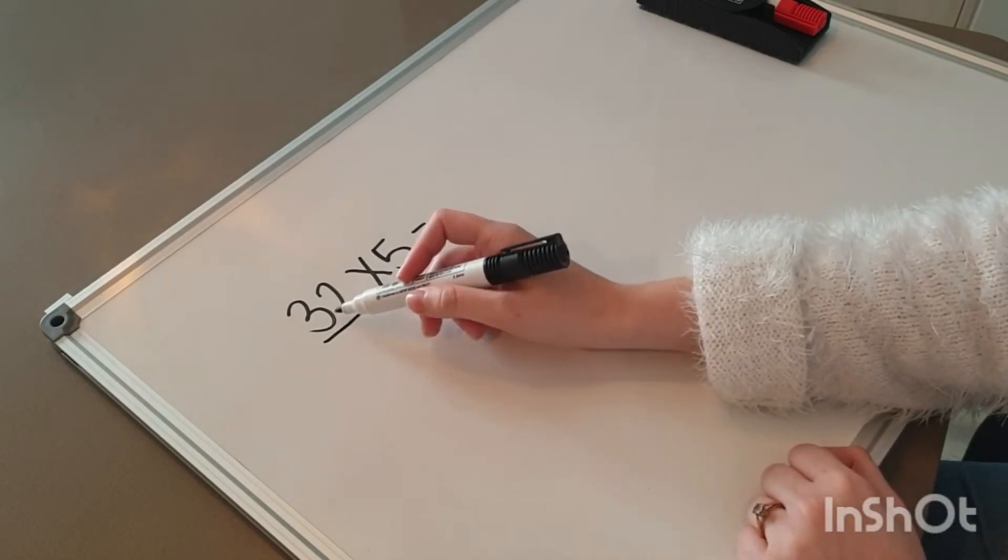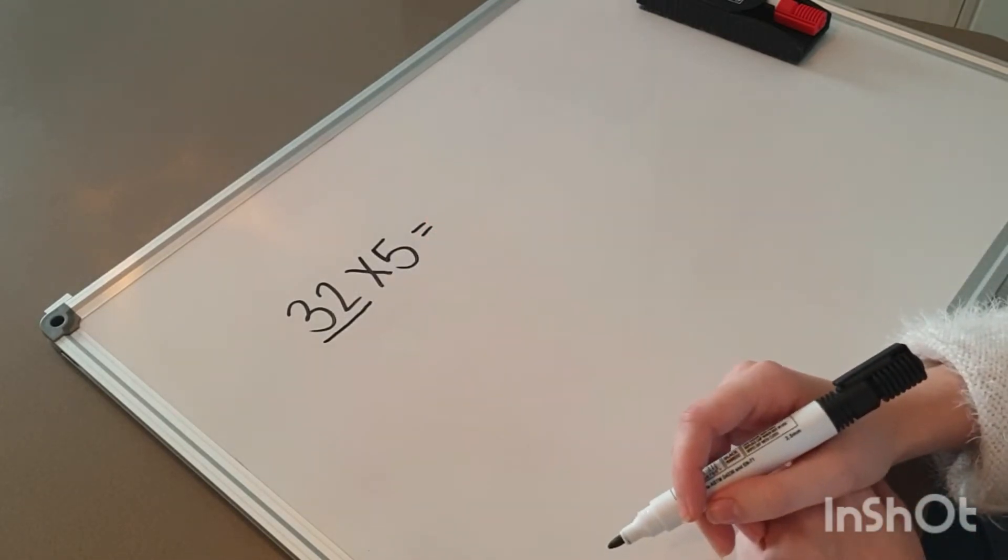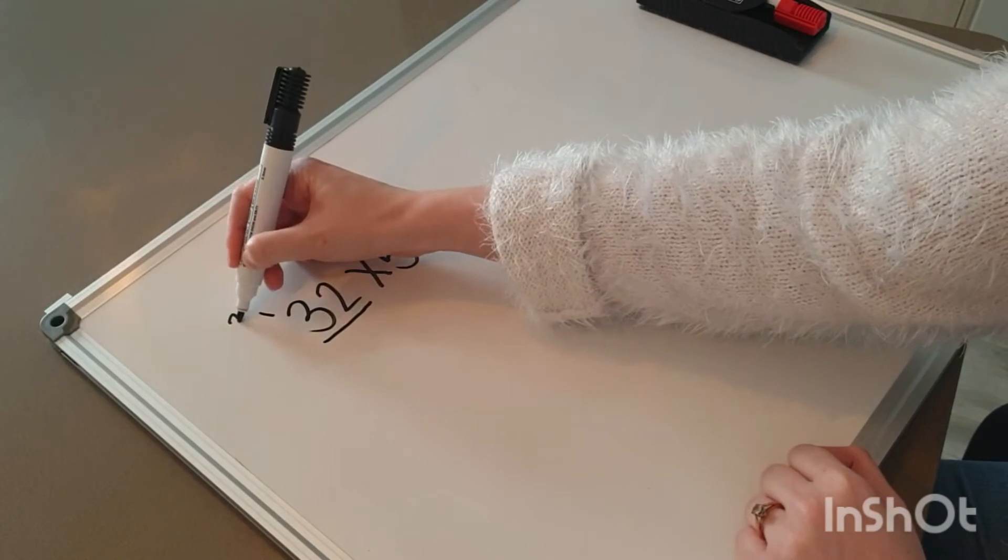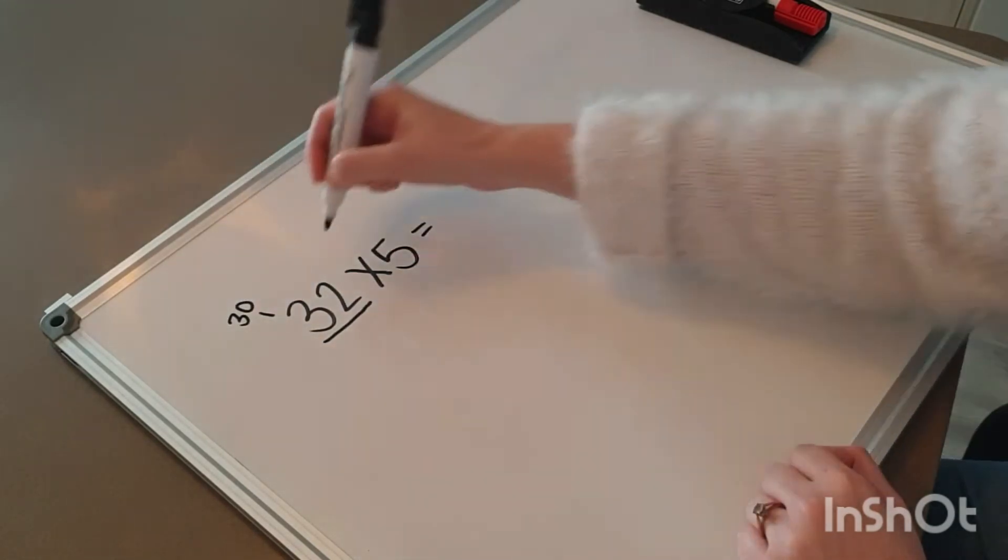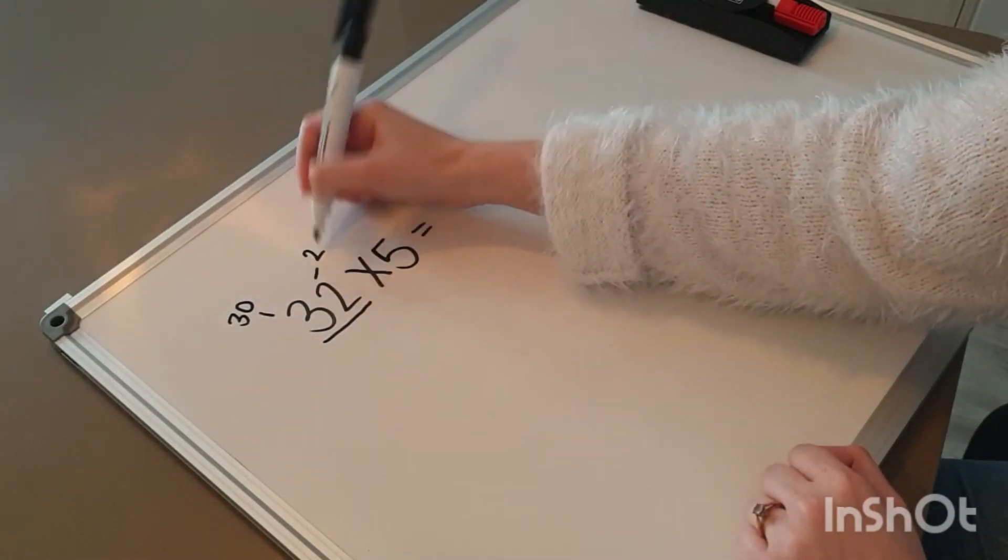Now, the first number is 32. So when I decompose it, I get 30 for my tens, and for my units, I get 2.